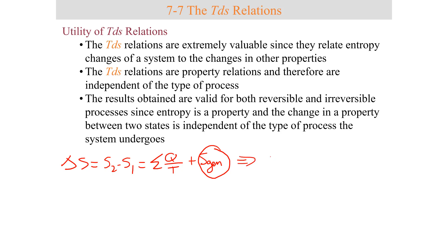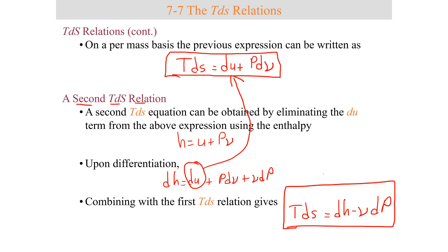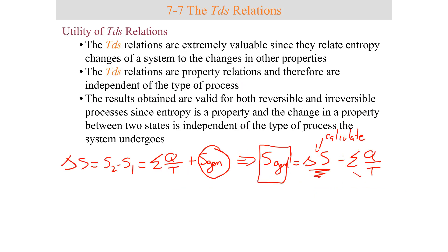To calculate S_gen for a closed system, we calculate delta S and then subtract all the entropy transfer terms. We get the entropy at state 2 and state 1 as properties, subtract one from the other to get the entropy change, then subtract all entropy transfer terms — the result is the amount of generated entropy. The TDS relationships let us actually calculate delta S by integrating dS.